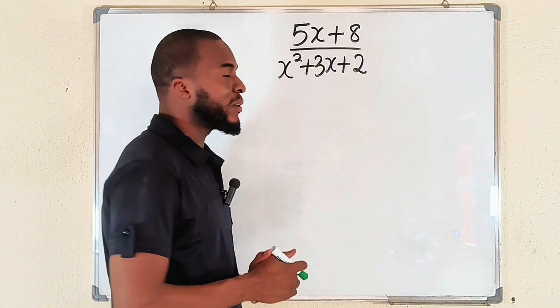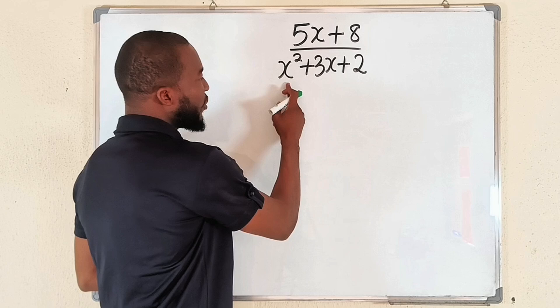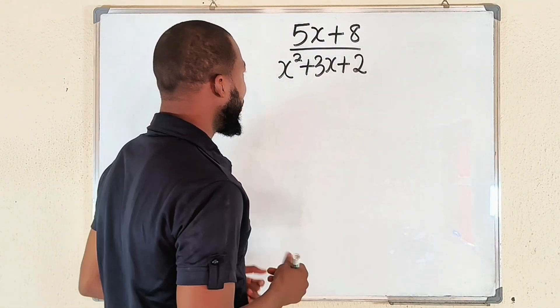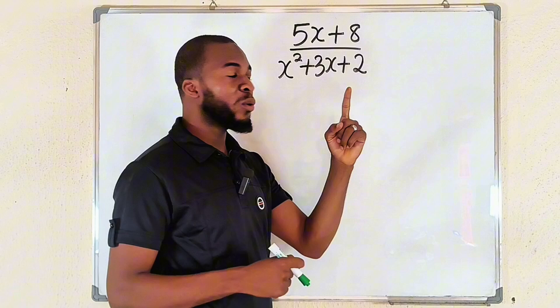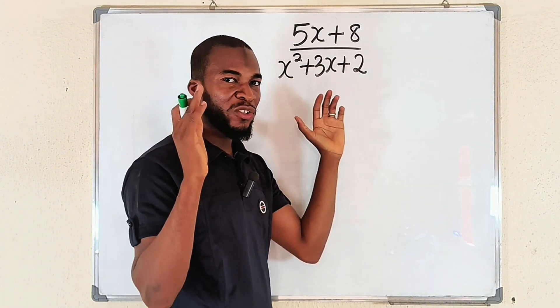Coming to this one, make sure that this is factorable. Let's see whether it is factorable. Think of two numbers which when you multiply them together you get the constant term, and when you add those two numbers together you get the coefficient of x which is 3.